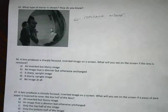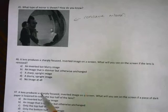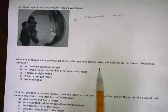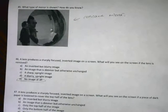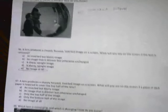Next is a lens produces a sharply focused inverted image on the screen. What will you see on the screen if the lens is removed? If you remove the lens, then you get rid of the fact that a real image has been formed. So there is no more image that is formed. It's just going to be blurry and no image is there.